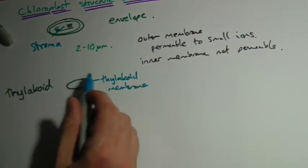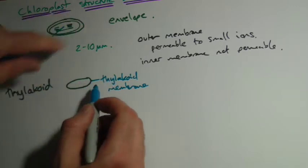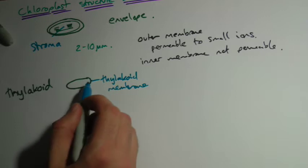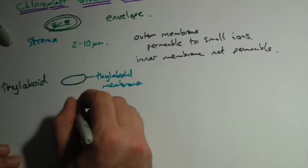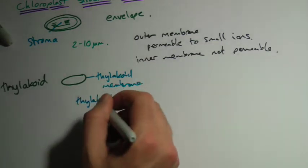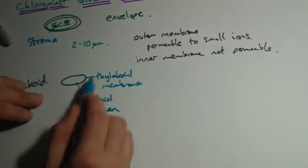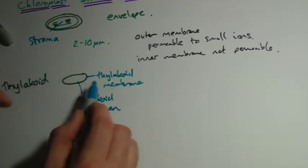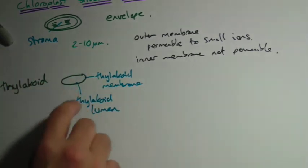Remember this inner membrane, because it's the same, this thylakoid membrane, it's the same kind of stuff as the inner membrane. It's pretty much impermeable to ions, and that'll become important in a second. Inside we can call this the thylakoid lumen. Remember, lumen is just the space in the middle of two things. So that thing itself is a thylakoid. That is a thylakoid membrane, and inside is the thylakoid lumen.